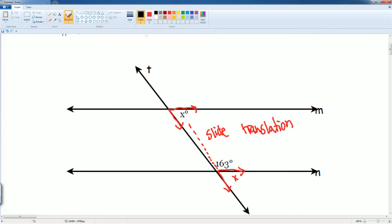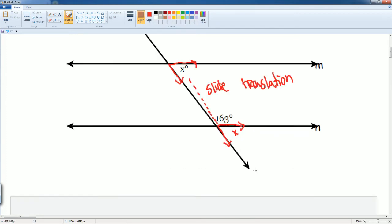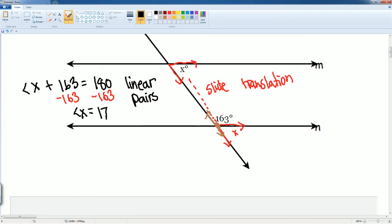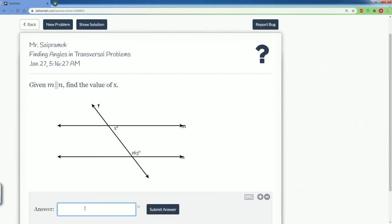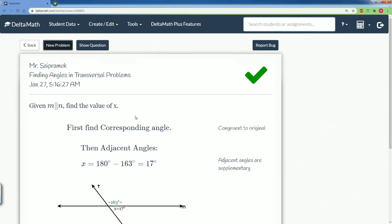It forms a line with this angle, so we know that angle X plus 163 degrees is equal to 180 because they are linear pairs. Now all we're going to do is solve for X. So subtract 163 from both sides—you get angle X is equal to 180 subtract 163, which gets you 17. So we put 17 here, hit enter, and yes, we are correct.